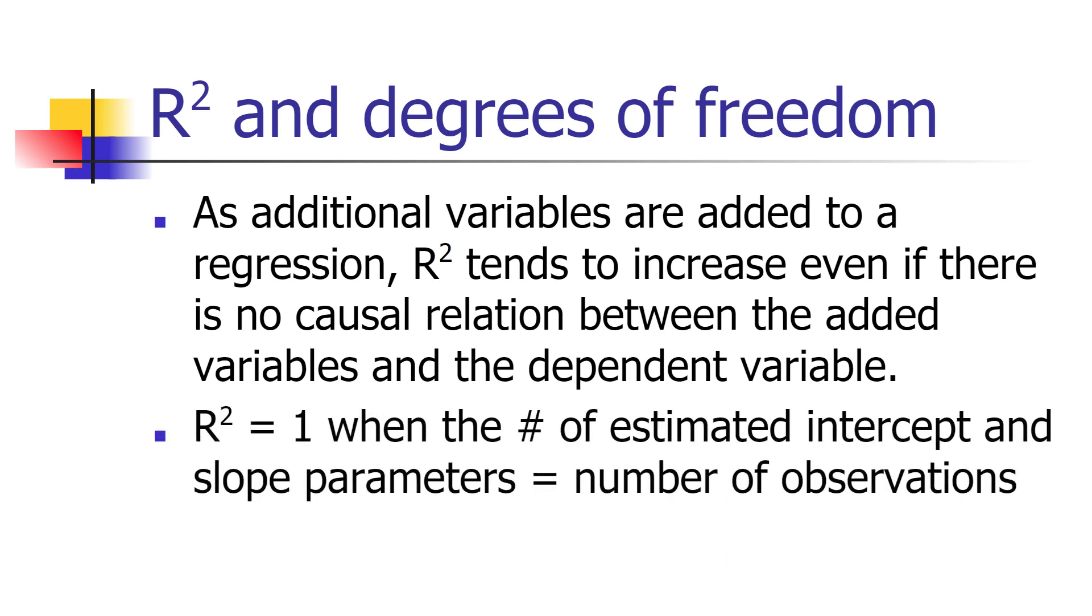What will always happen is that R-squared will equal 1 when the number of estimated intercept and slope parameters equals the number of observations.